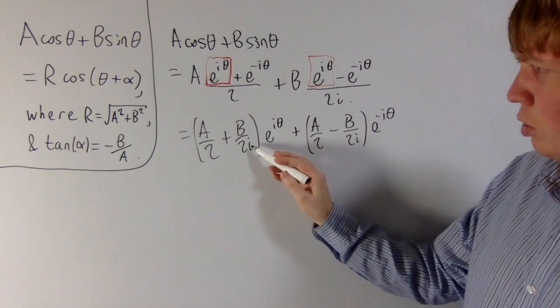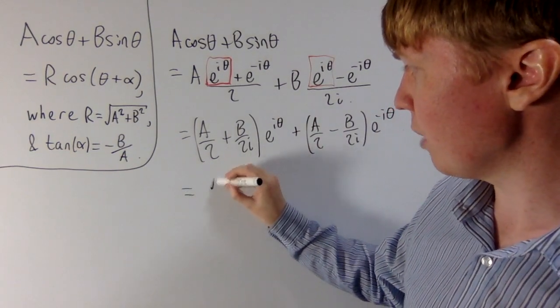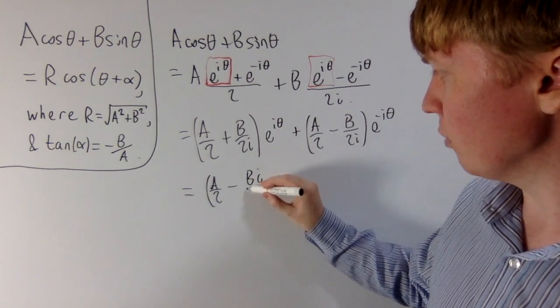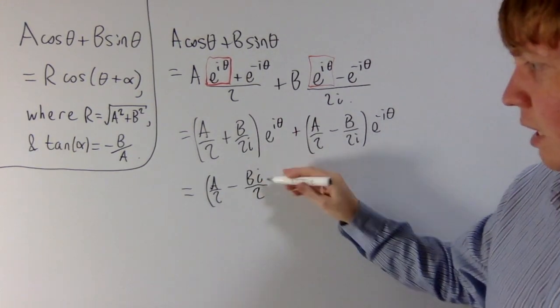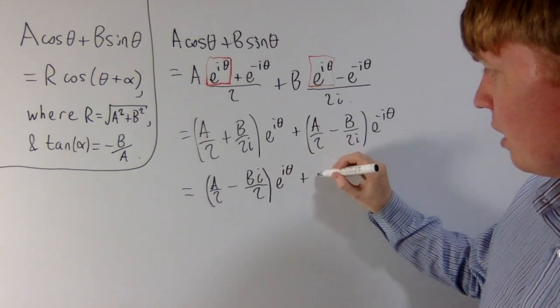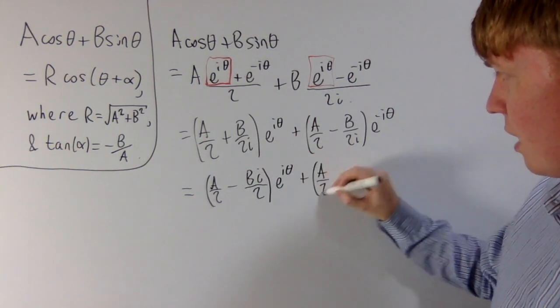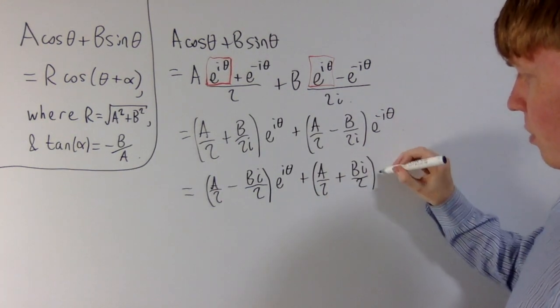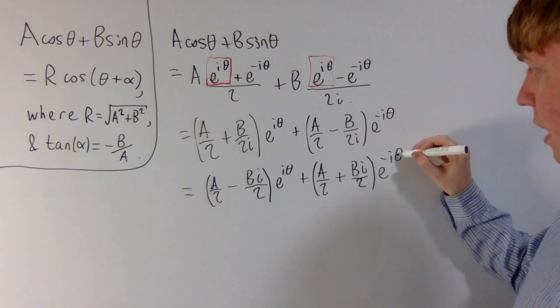What we'll do next is deal with these i's in the denominator. We don't want those, so we'll have A over 2, and now it's minus B i over 2, so the two i's you multiply together give you a negative, still multiplied by e to the i theta, and then plus A over 2 stays as it is, and now it's plus B i over 2 multiplied by e to the minus i theta.